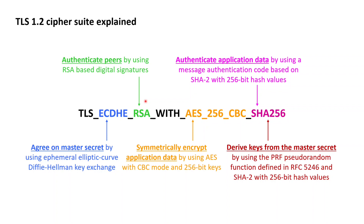If we go to the next non-generic part in the cipher suite to the right of RSA, we get to a part that reads AES 256 CBC. This part specifies that confidentiality is provided to the application data exchanged after the handshake protocol by symmetrically encrypting the application data with the AES block cipher behind the CBC block cipher mode of operation, using 256-bit symmetric AES keys.